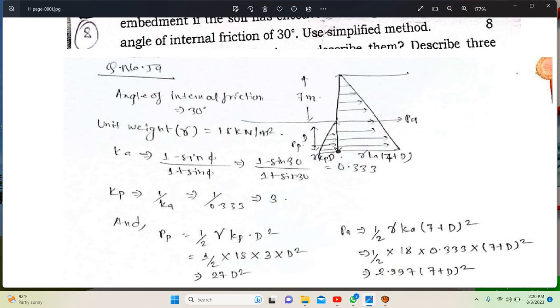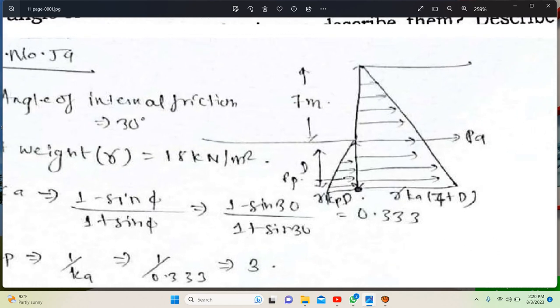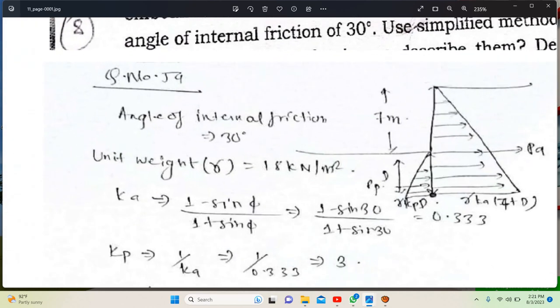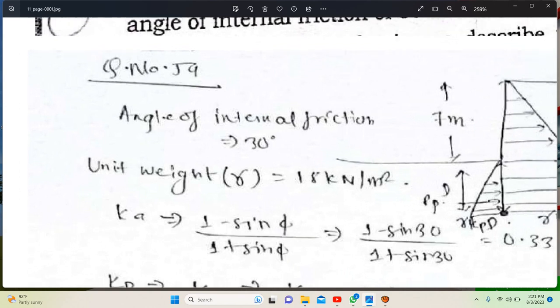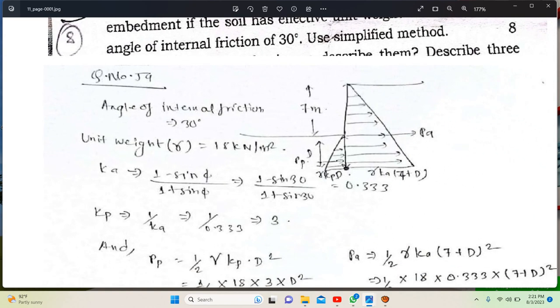We can see the figure here. Angle of friction is 30 degrees. Unit weight gamma value is 18 kilonewton per meter cubed.